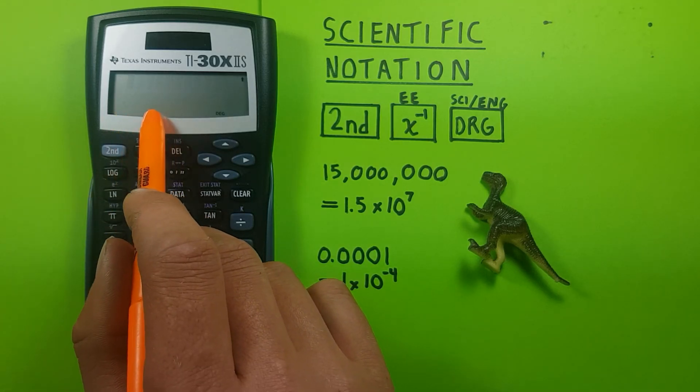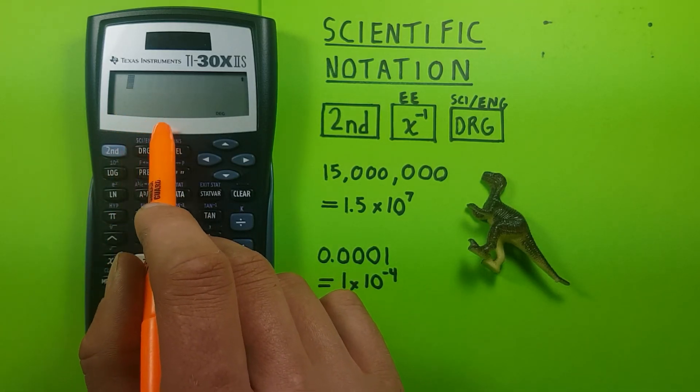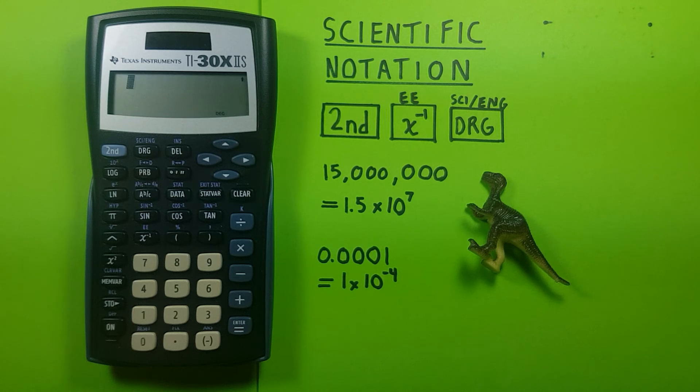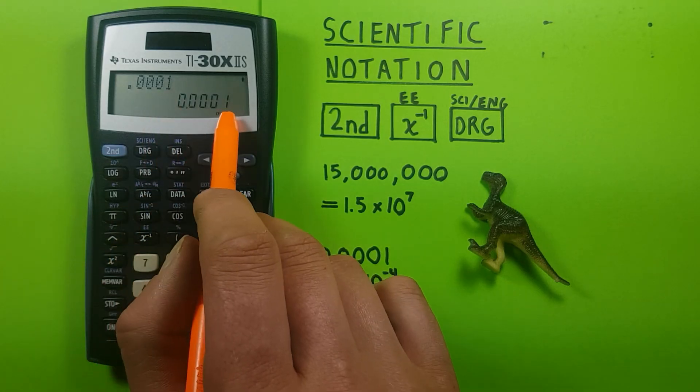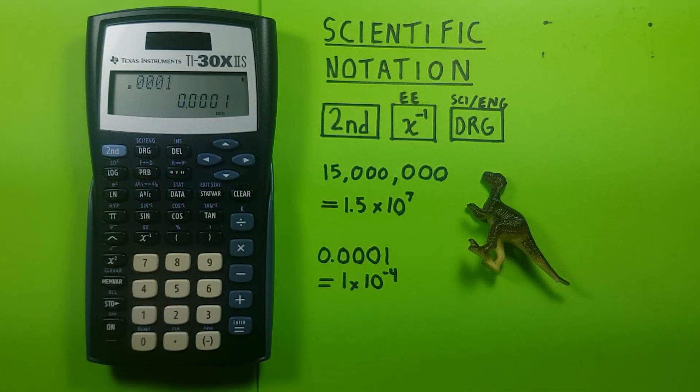We see the SCI at the bottom has disappeared, and we're back in normal notation mode. So if we enter our 0.0001, hit enter, it doesn't change. Alright, I hope this helps, and good luck on those tests.